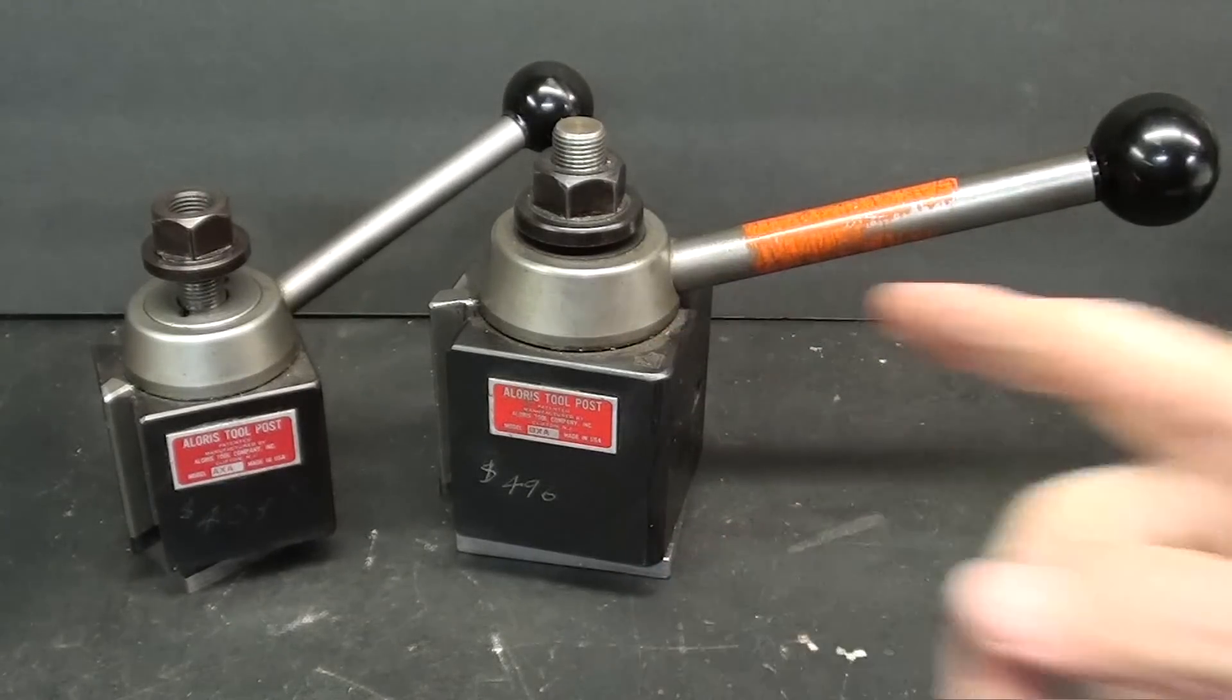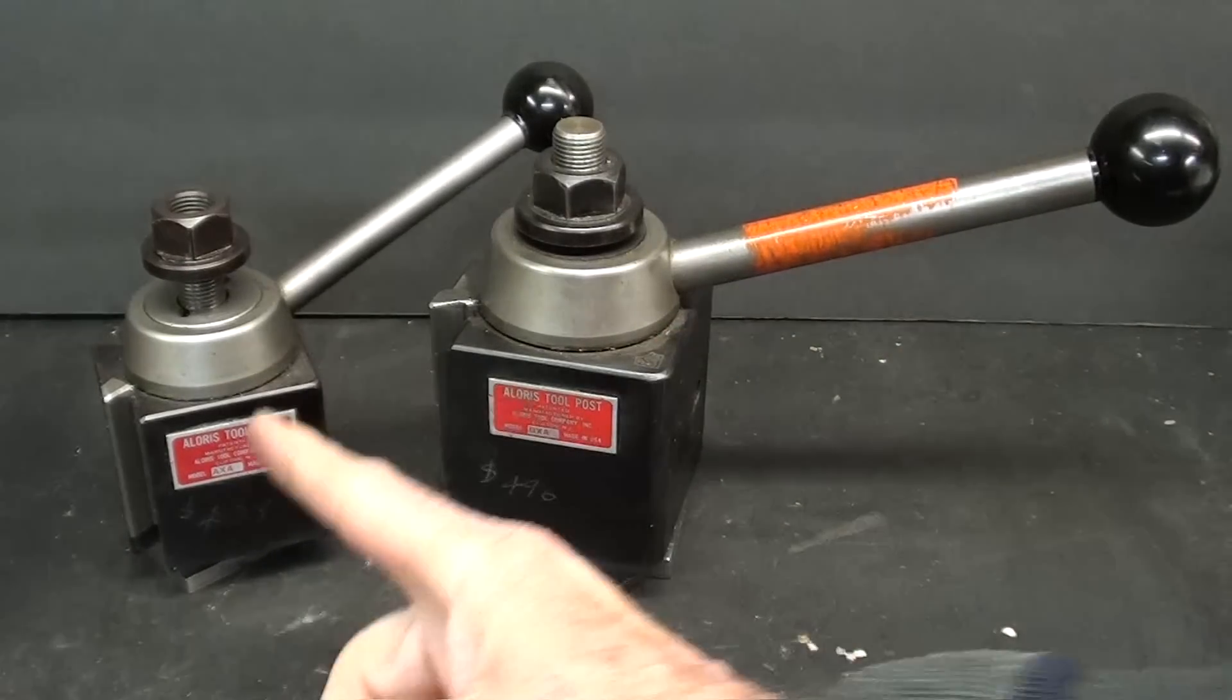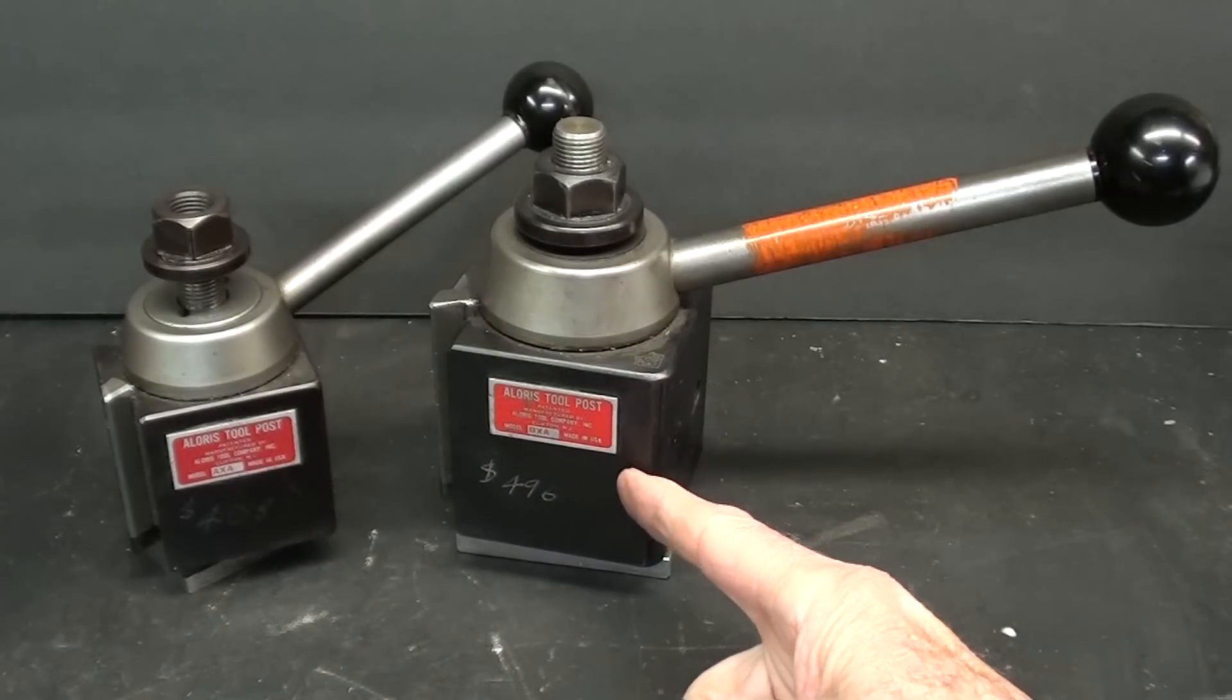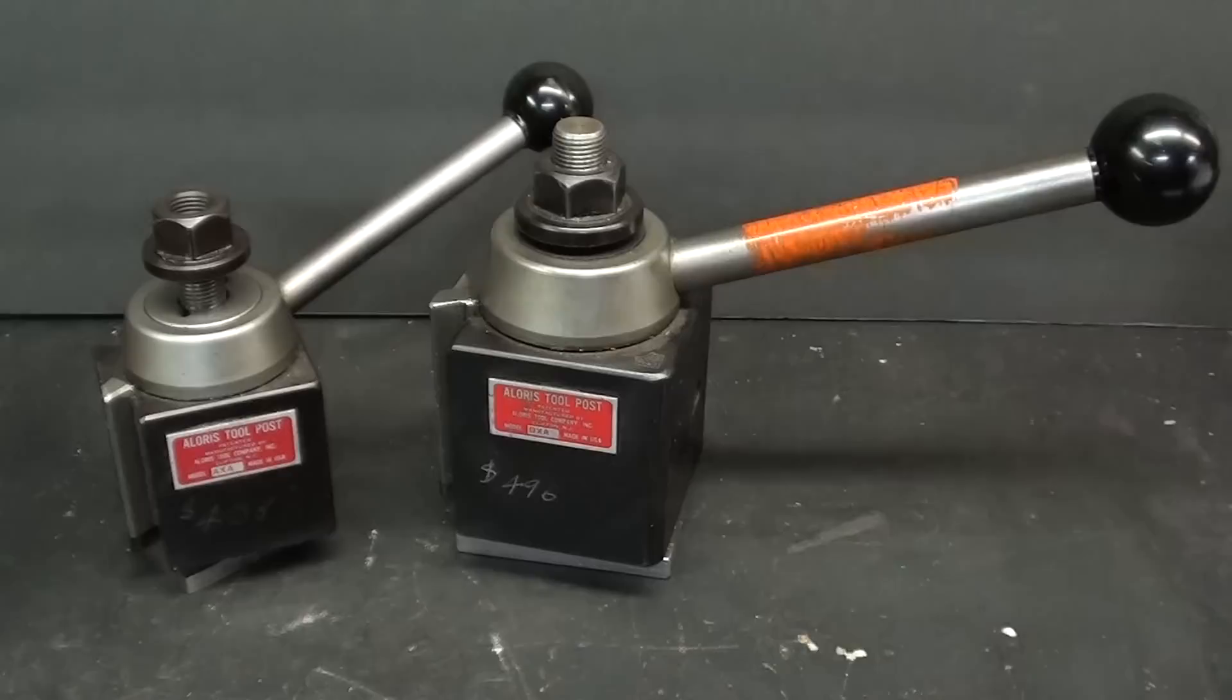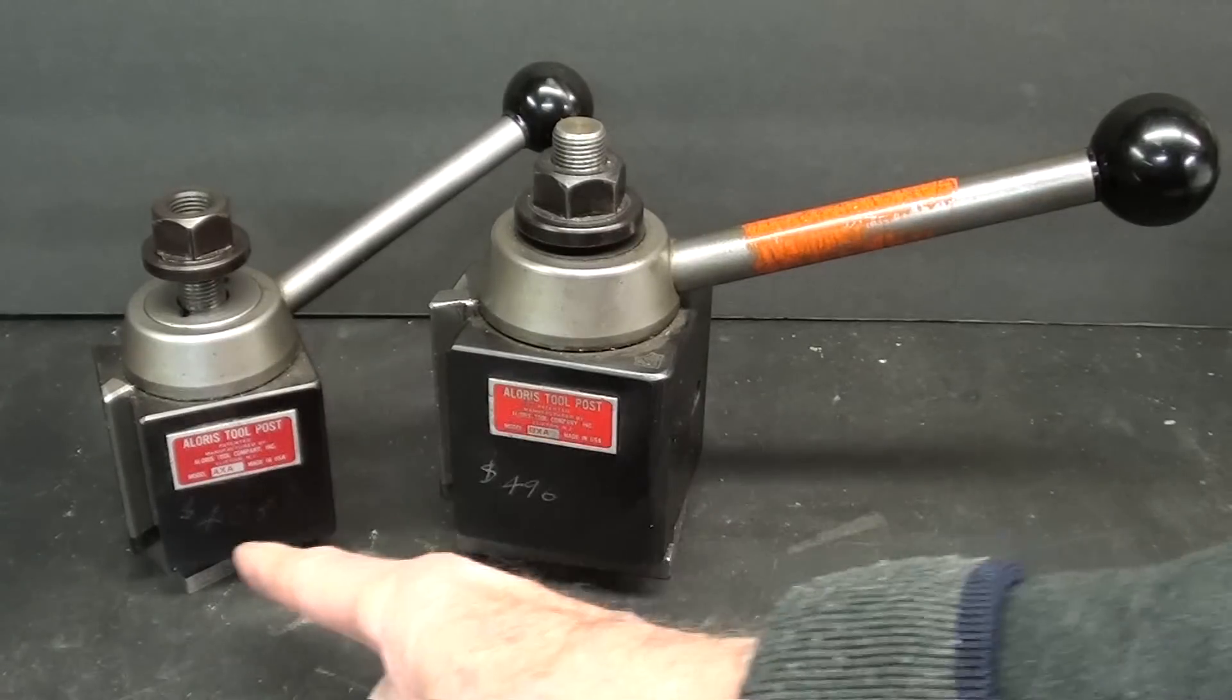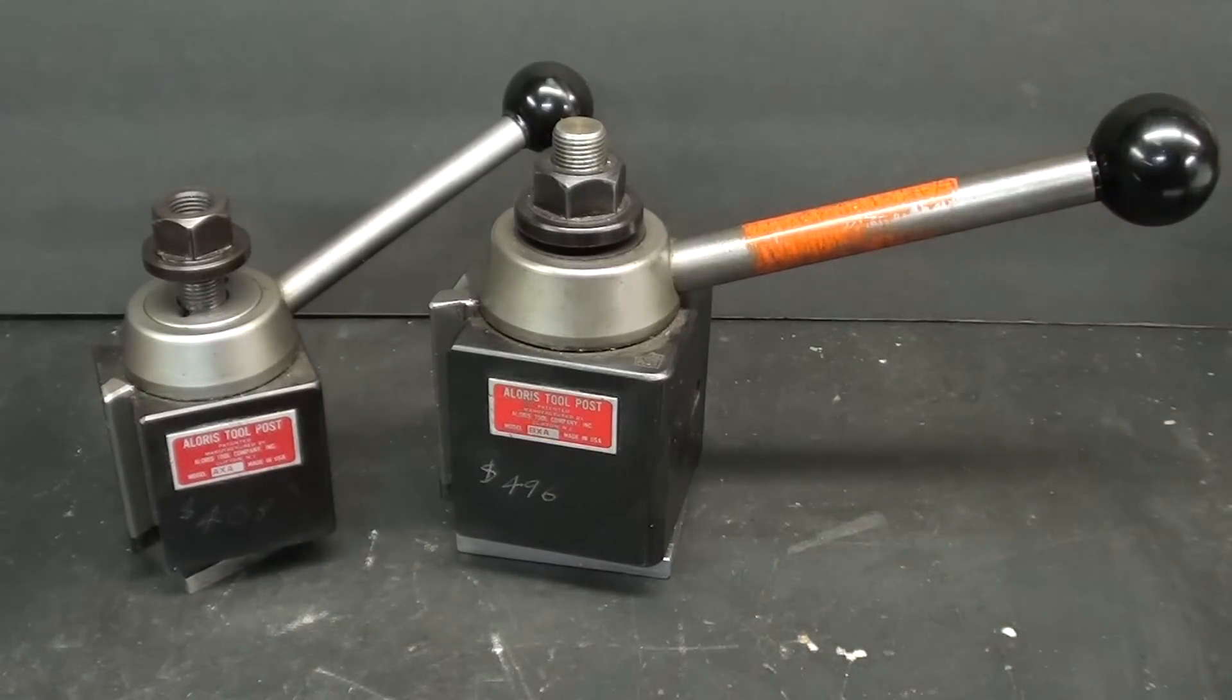These tool posts are made in six sizes. This is the smallest size, AXA. This is the next size, BXA. And those are the two that you would more than likely need in your home shop for smaller lathes. So, they work their way clear up from A, B, and then there's a C, D, and E series as well, and they get incredibly expensive as they get larger.